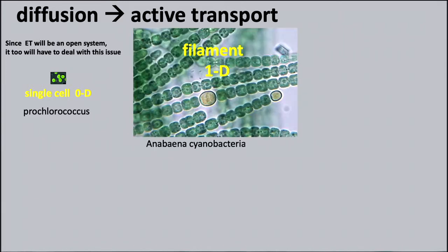One way to understand cell organization is through dimensionality. A single cell is like a zero-dimensional object where diffusion is most effective. To increase surface area, you can form a filament — a 1D structure. Some bacteria produce filaments with several distinct cell types, even though we generally say bacteria are not multicellular.